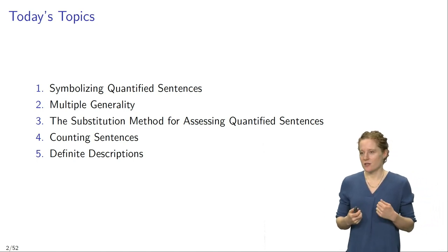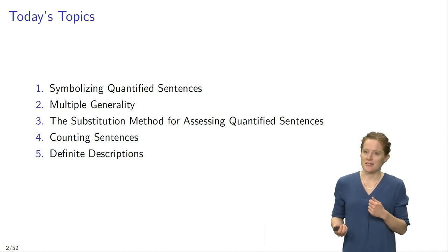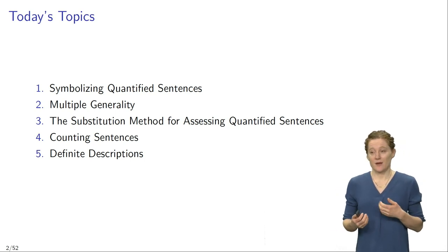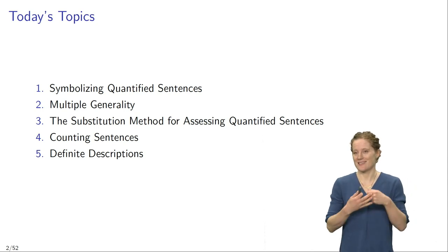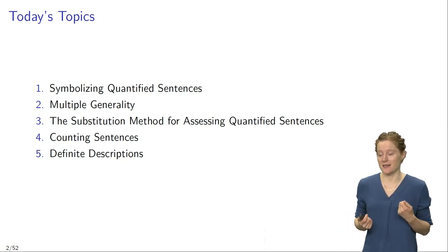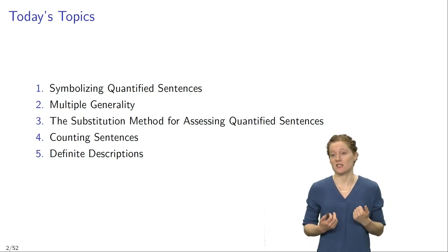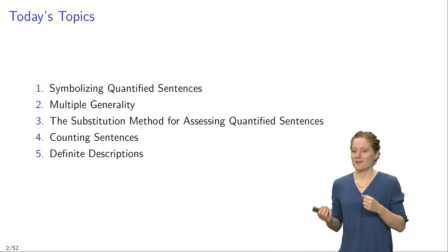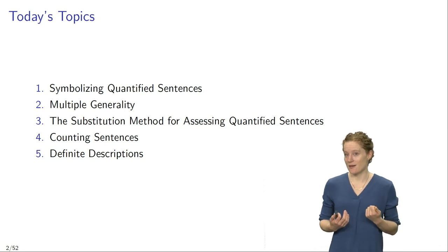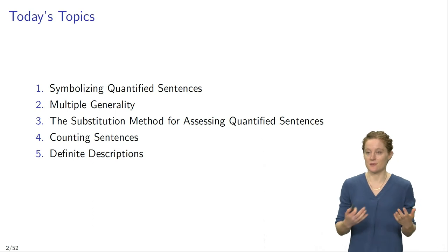We are going to talk about different topics having to do with multiple generality. We will first discuss how to symbolize quantified sentences in English, proceeding in two steps: first how to symbolize quantified sentences in general, then specifically sentences that use multiple quantifiers, since that case creates special challenges. Then we will discuss the substitution method for assessing quantified sentences, with a special eye on how to assess the truth of sentences that use more than one quantifier.